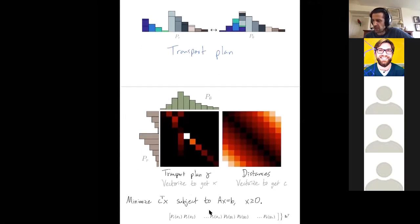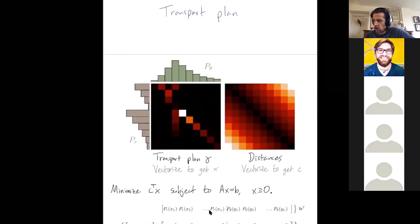Questions so far? Let's write this as a linear program. Our transport plan, it's a huge matrix, but we're going to vectorize it. So take all the columns of this matrix and just stack them on top of each other to get a really long vector. So if I have n columns and rows, I'm going to have a vector of length n squared, encoding all of these possible transport plan variables. And similarly, let's vectorize this matrix of distances. And that's going to give our cost vector.